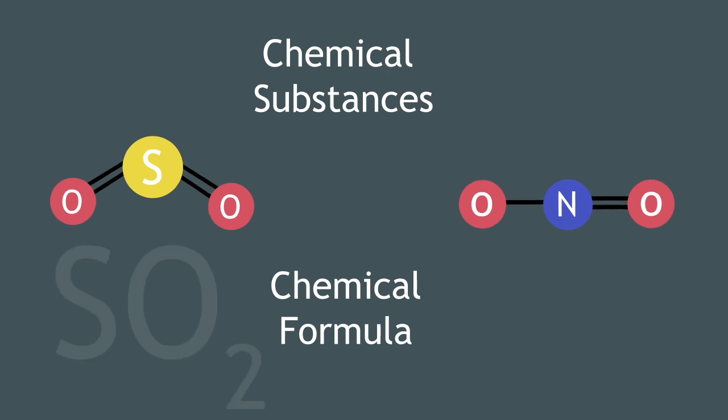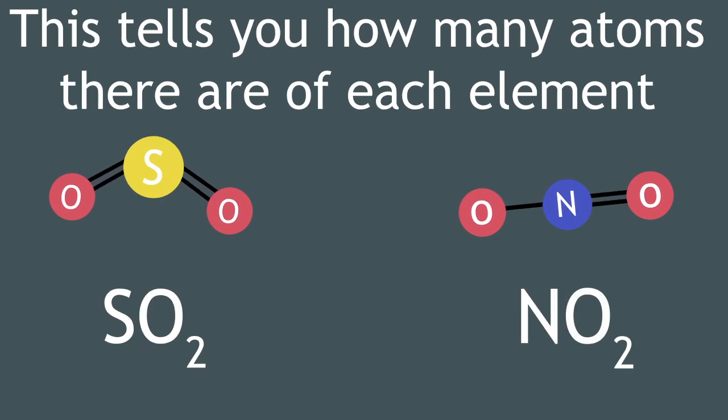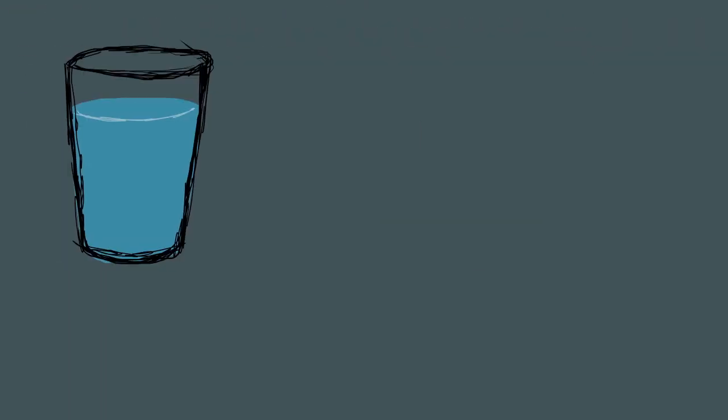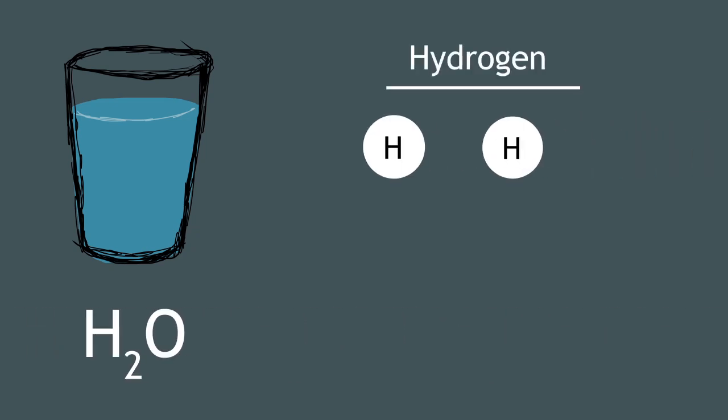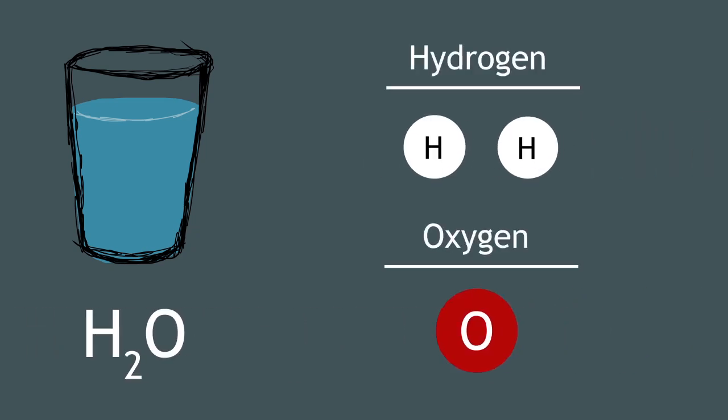Chemical substances are written as a chemical formula. This tells you how many atoms there are of each element. Water is written as H2O. This tells you that there are two atoms of hydrogen for every atom of oxygen.